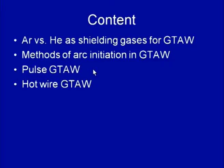There is another variant of the GTAW process called the hot wire GTAW process. In this process the filler metal is heated before feeding into the arc zone so that the melting rate can be increased and heat input to the base metal reduced for achieving the same welding speed, which helps in getting higher welding speed.